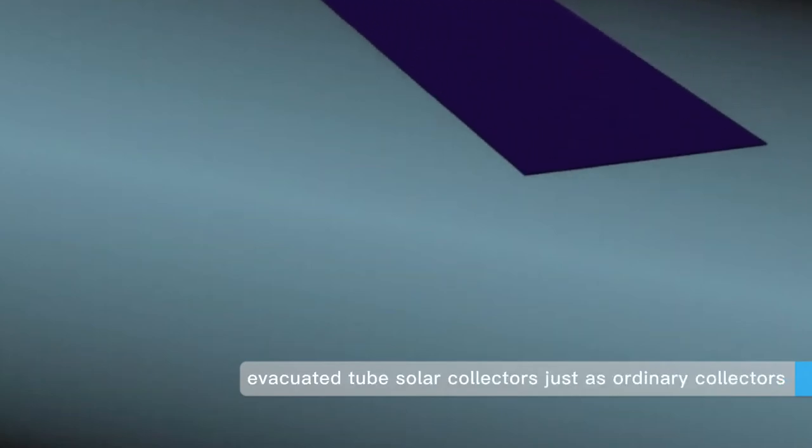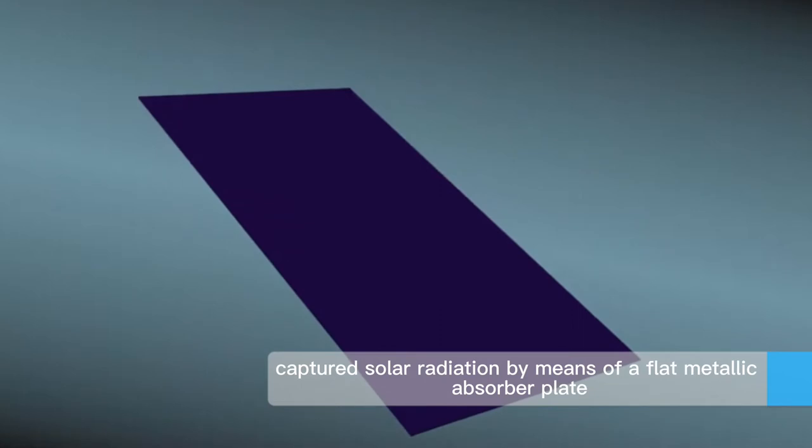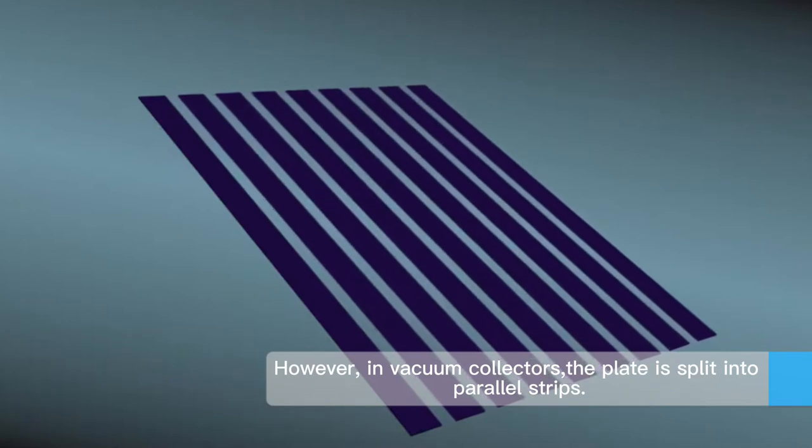Evacuated tube solar collectors, just as ordinary collectors, capture solar radiation by means of a flat metallic absorber plate. However, in vacuum collectors, the plate is split into parallel strips.